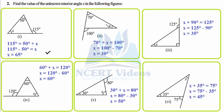For the second figure, 100° equals 70° plus X. Transposing 70 to the right-hand side, its sign changes to negative: 100 minus 70 equals 30°. For the third figure, 125° equals X plus the angle shown. Whenever you see a square box within an angle, it represents 90°, so X plus 90° equals 125°.